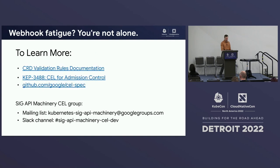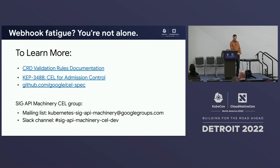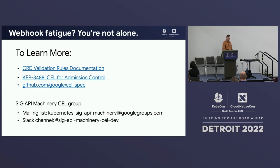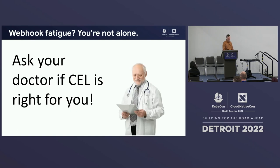If you want to learn more, the documentation for CRD validation rules is in the main Kubernetes documentation for CRDs. The CAP has a lot of useful information. You can learn a lot about CEL — just Google for it. You can reach us at the API Machinery mailing list, and we also have our own Slack channel just for talking about CEL. You're welcome to drop in and we'd love to hear from you.